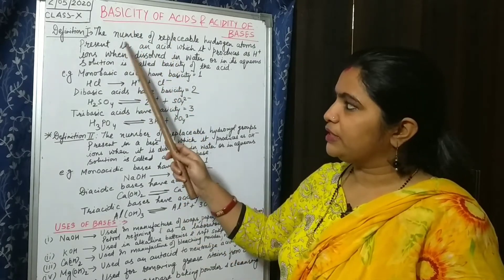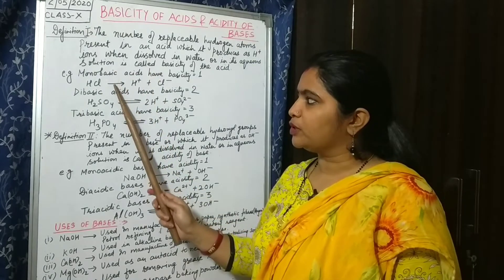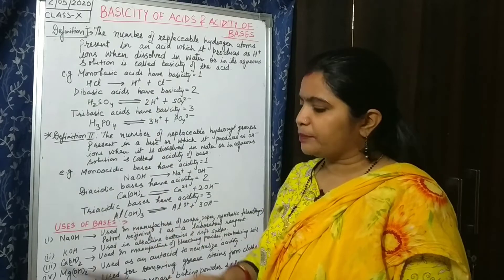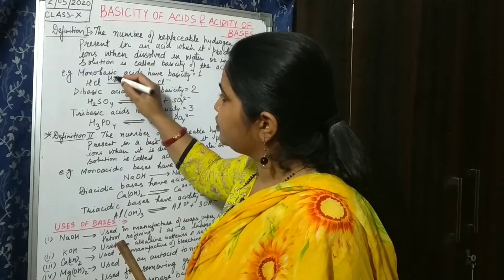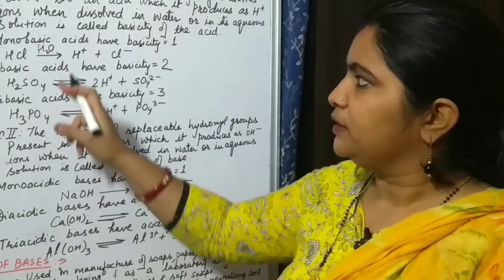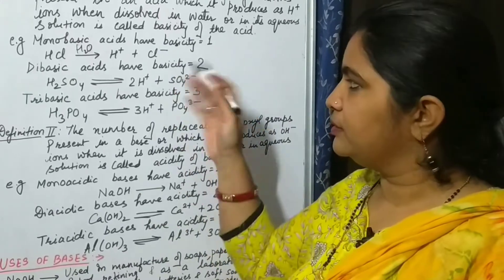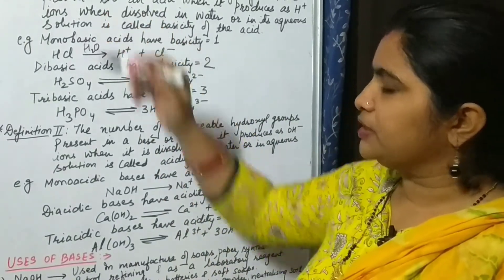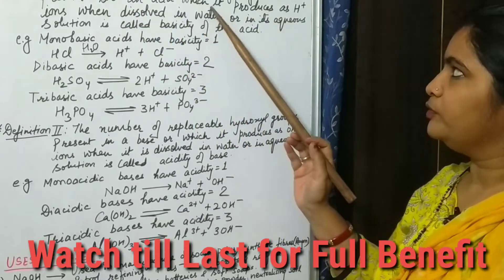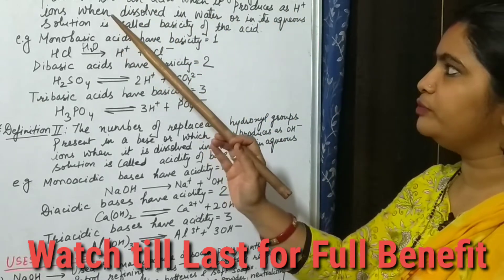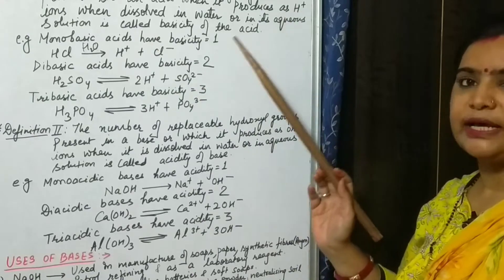We will study and understand what this means. Whenever acids react with water, in the presence of water when they dissociate, they have the capacity to ionize. In aqueous medium, an acid ionizes and produces H+ ion. Here you could see the definition: the number of replaceable hydrogen atoms present in an acid which it produces as H+ ions when dissolved in water or in aqueous solution is called basicity of the acid.